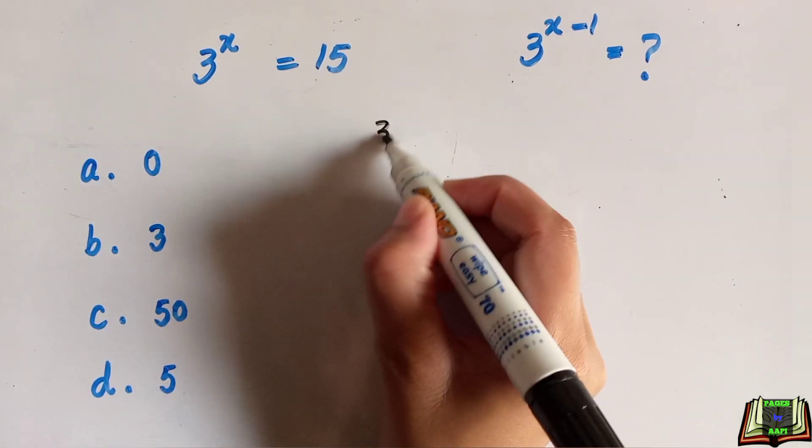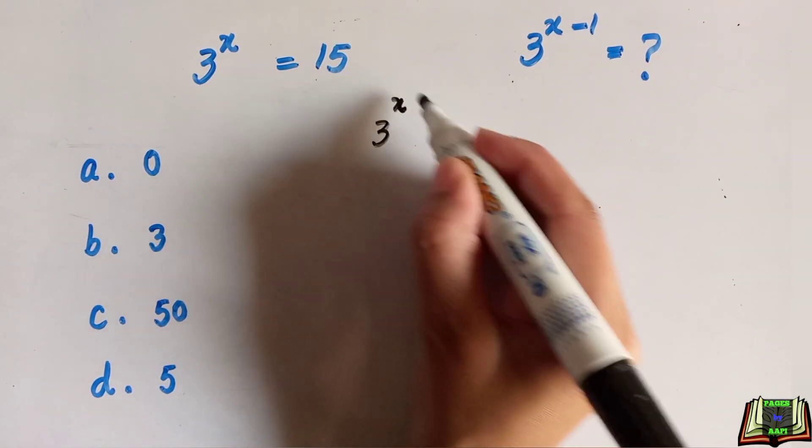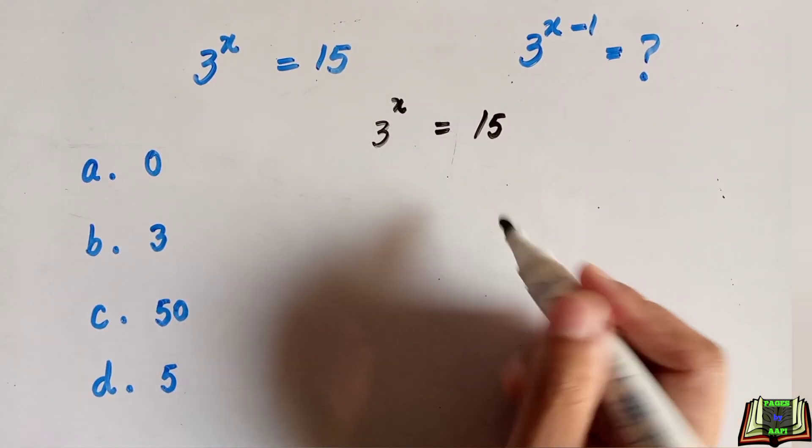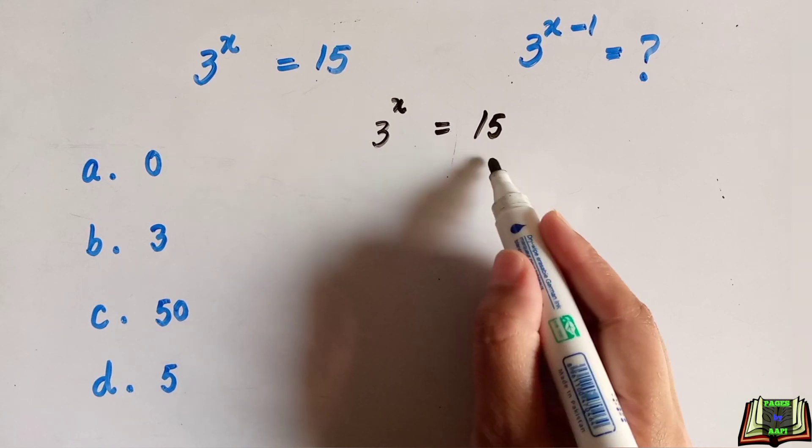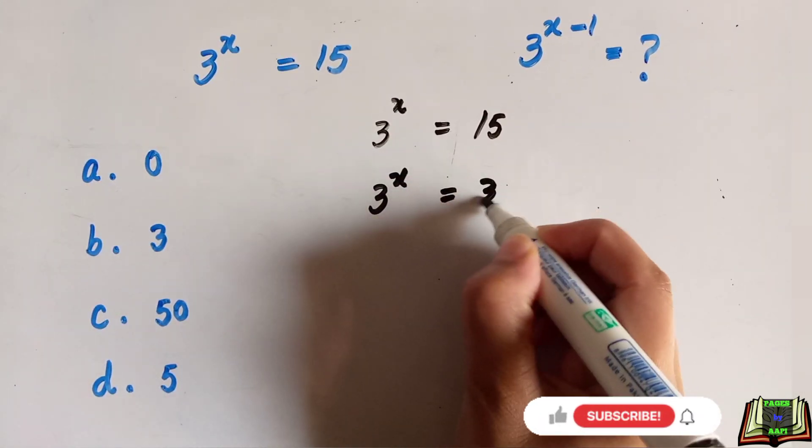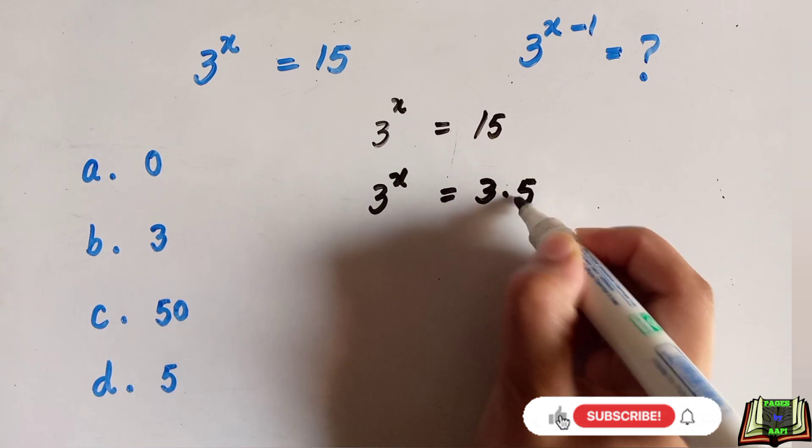We will start with 3^x = 15. We can split 15 as 3 × 5. We will write 3^x as it is, and 15 as 3 × 5.